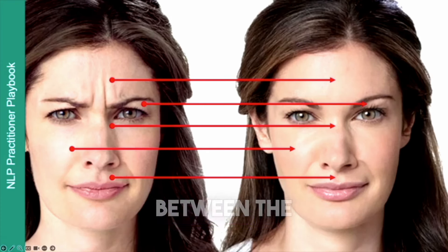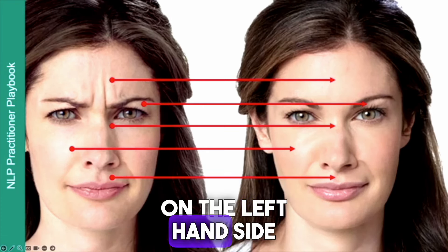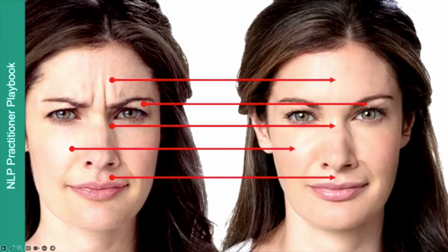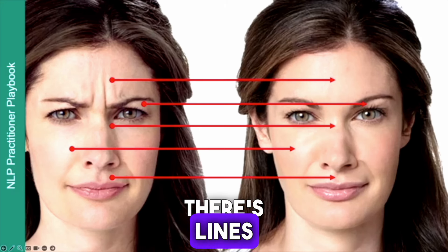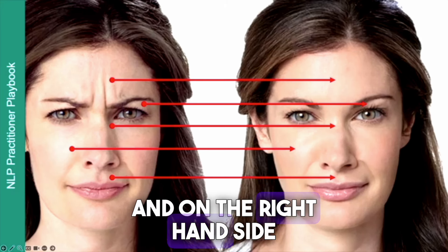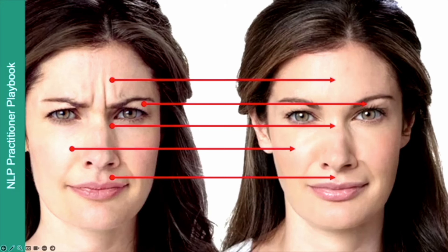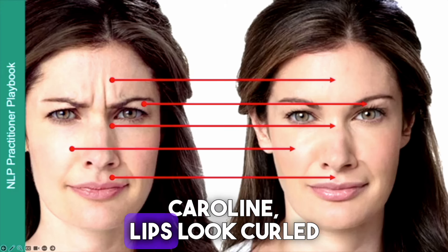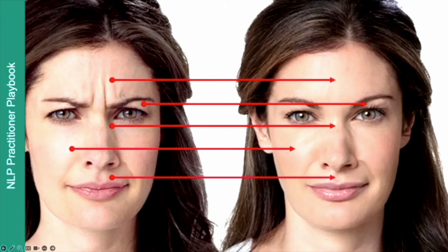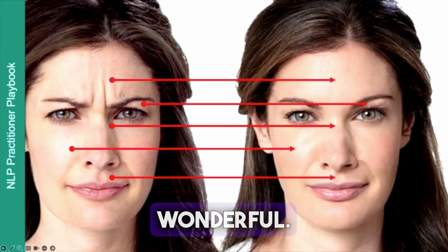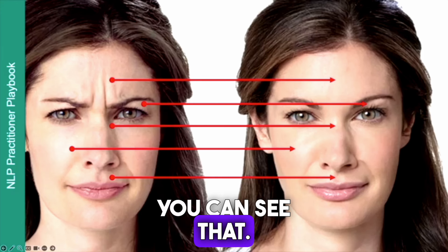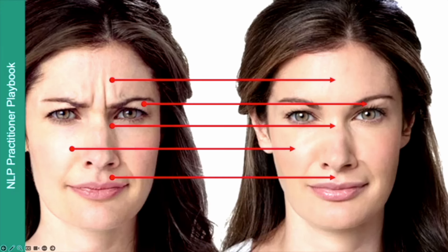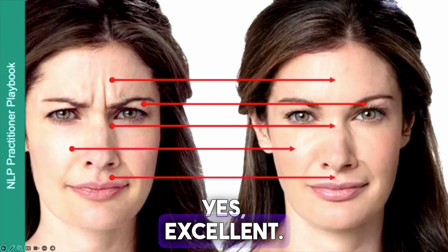Have a look at the difference between the lips. On the left hand side there are lines, and on the right hand side there are no lines. Caroline, the lips look curled up — yes, on the left the lips are curled up. You can see that. And the enlarged iris — yes, excellent.